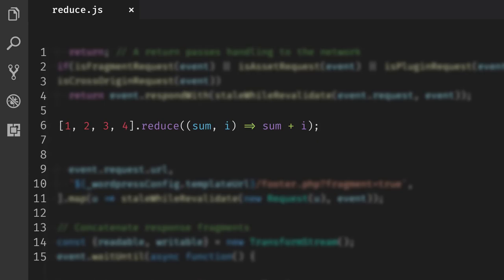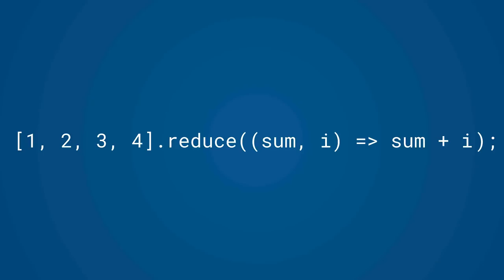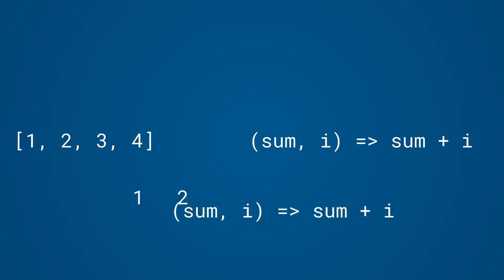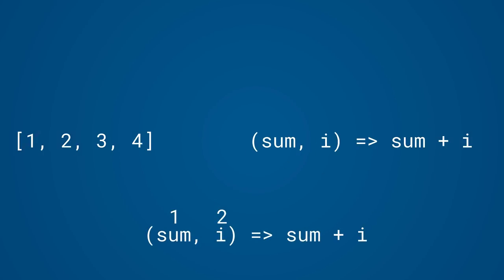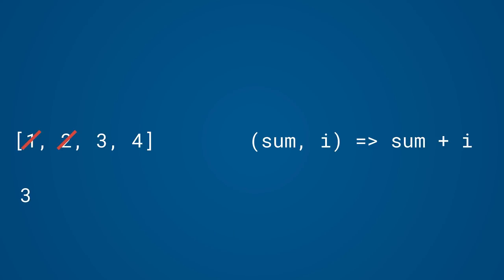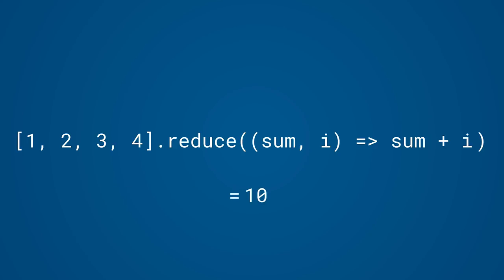The standard example is calculating the sum of an array of numbers. So let's take a closer look at how reduce and the reducer interact. Reduce takes the first two elements in the array and uses the reducer function to reduce them to a single value. Next, the process repeats with the previously calculated value and the next value in the array, and this keeps repeating until we are left with a single value.